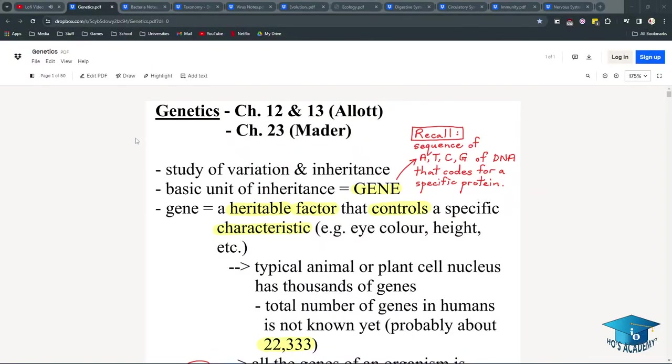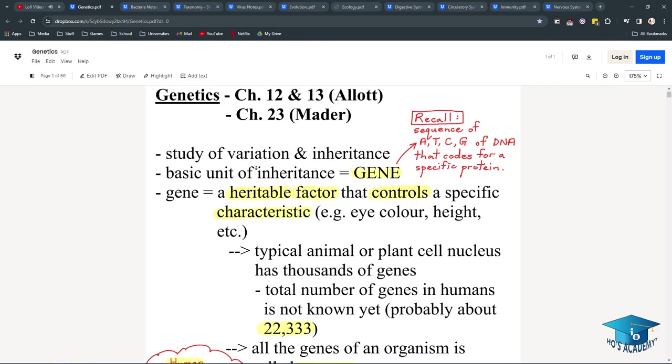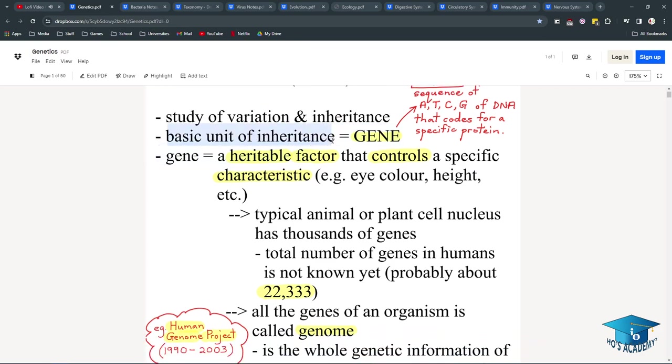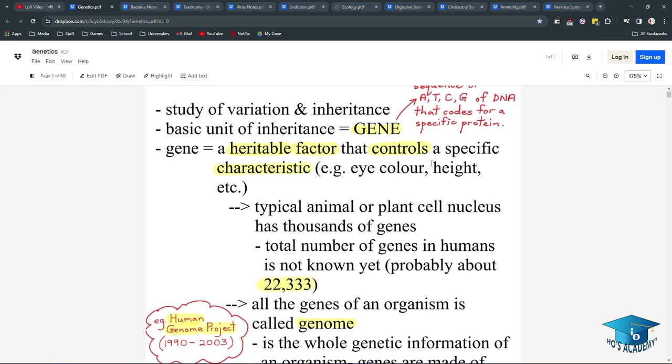Now for everybody's least favorite unit, probably just me projecting, genetics. Study of variation and inheritance in humans, or every animal, and plants even. Basic unit of inheritance is a gene, because genes are what code for a protein. A gene is a heritable factor that controls a specific characteristic. For example, you have a gene for eye color, height, etc.